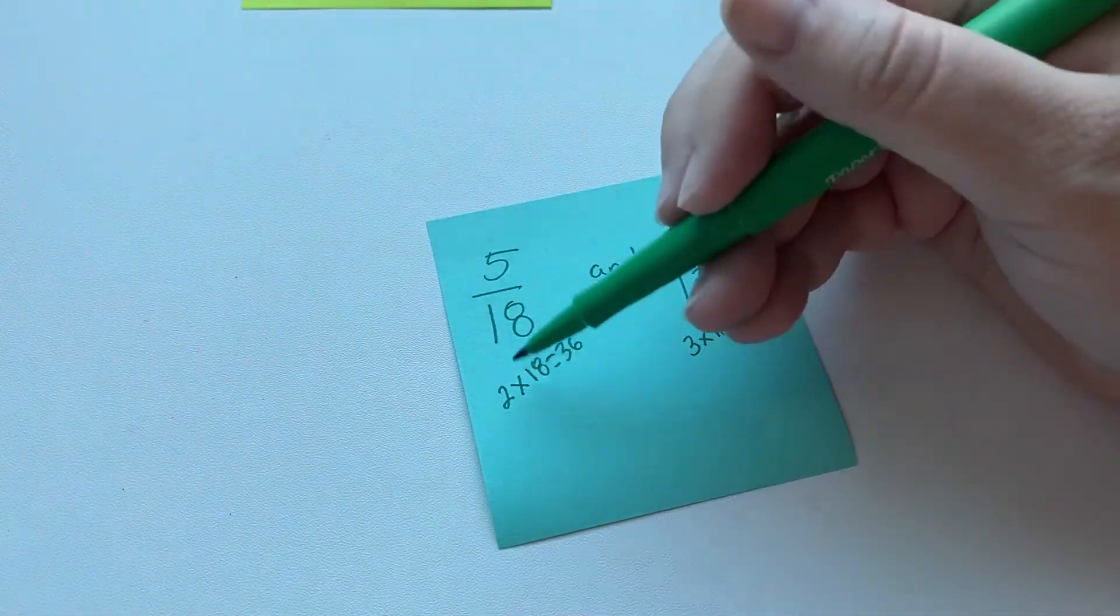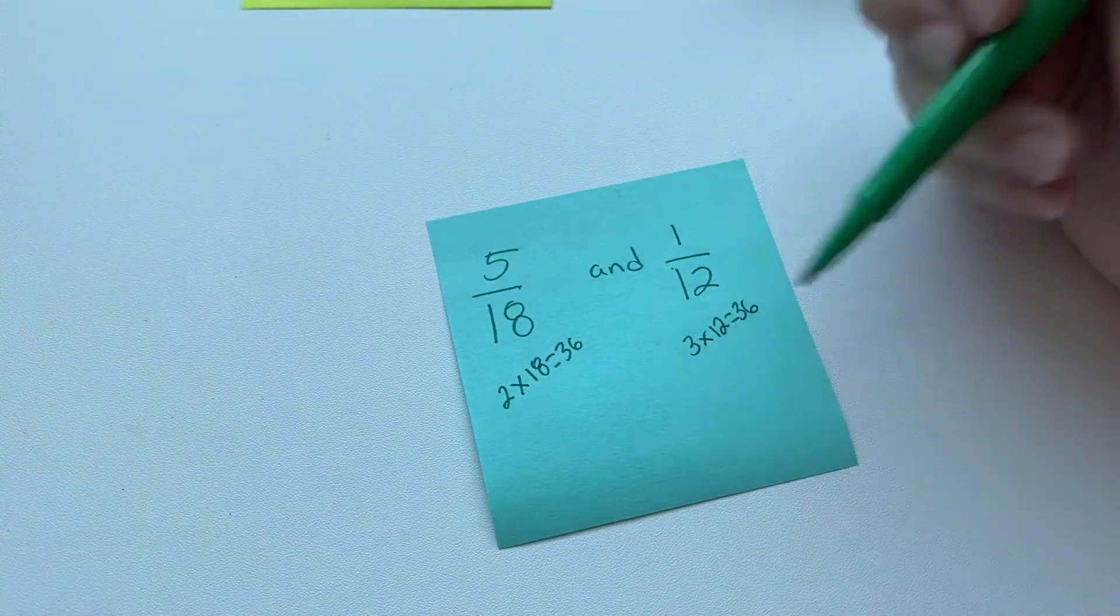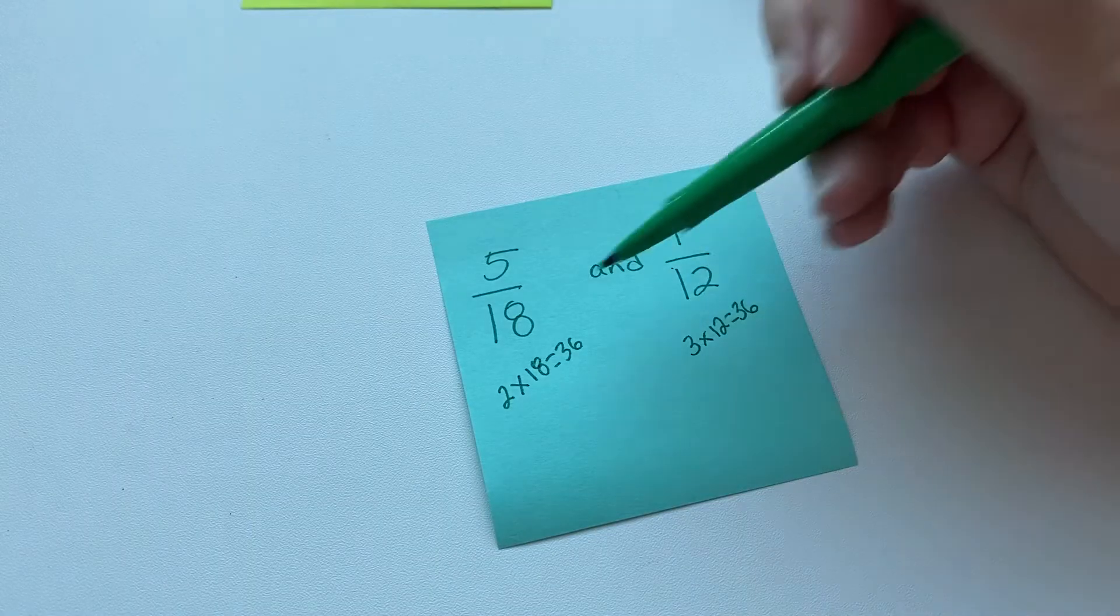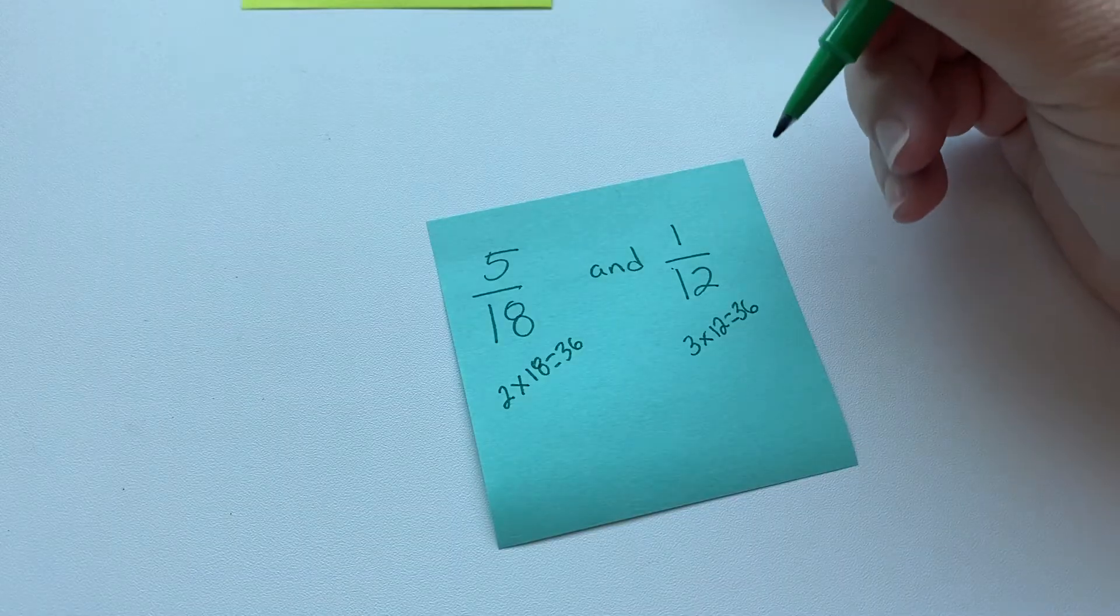If 12 didn't go in, then you would have to do 18 times 3, 18 times 4, 18 times 5. You can always go back to that other method, though, and just multiply by the denominators in a form of one. Okay.